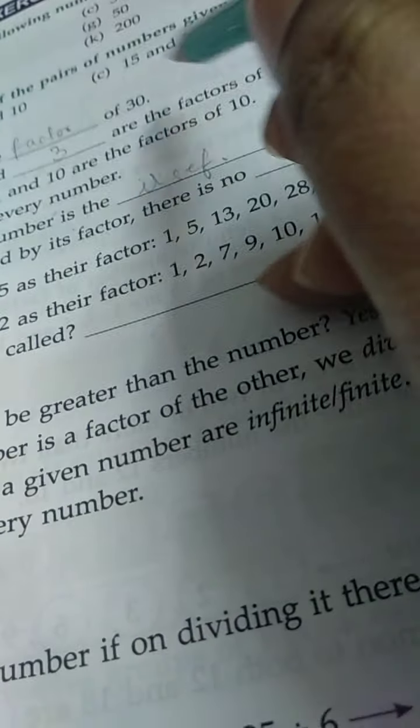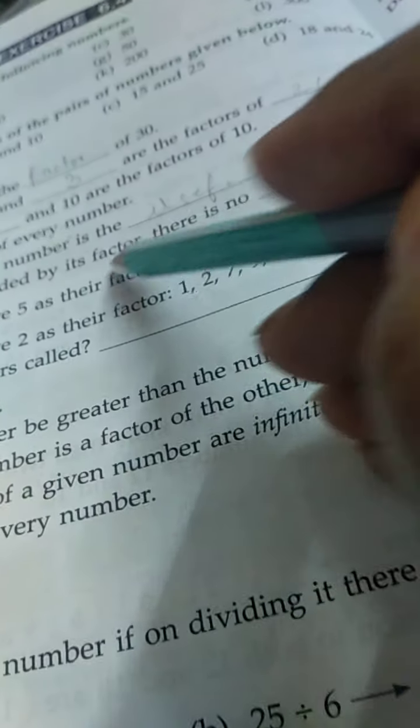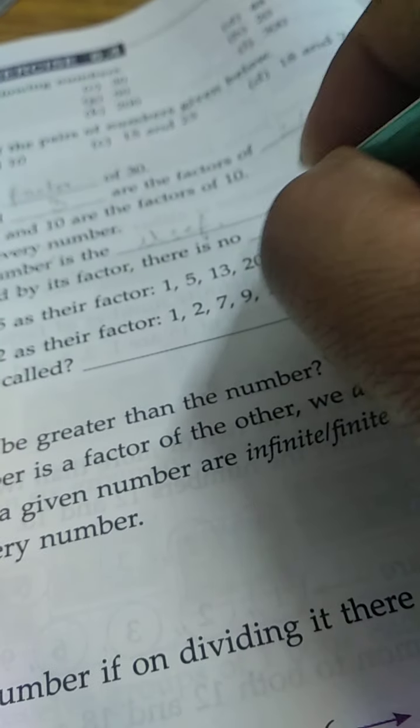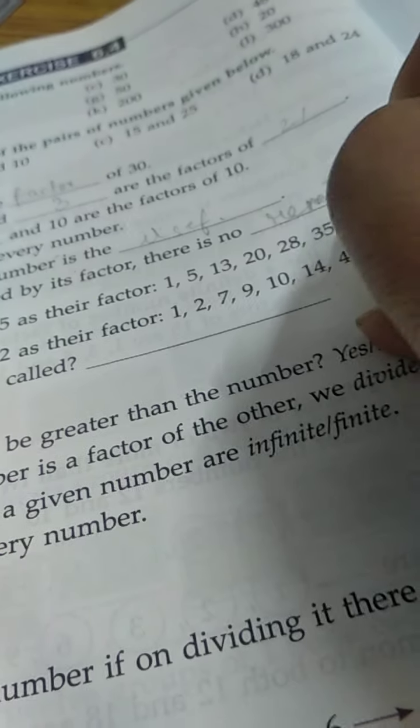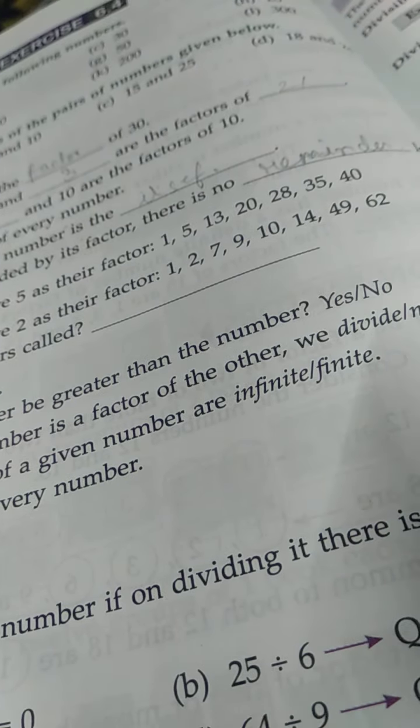The greatest factor of a number is the number itself. If I see 30, then 6, 5, and 30 itself is the biggest factor. When a number is divided by its factor, there is no remainder left. Okay, done.